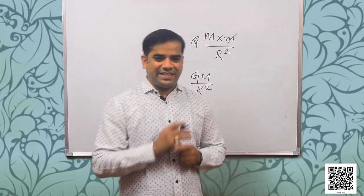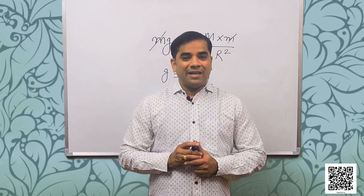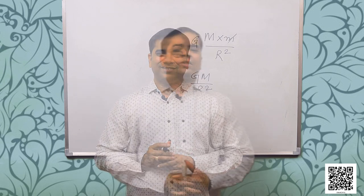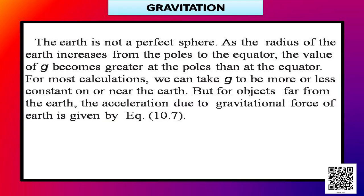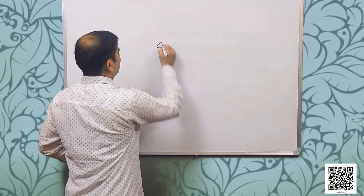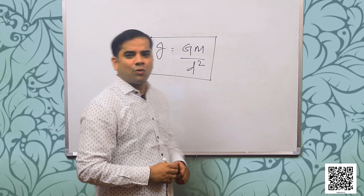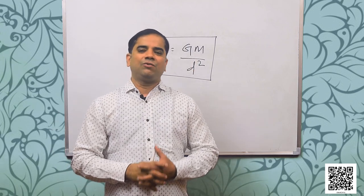Acceleration due to gravity g equals the product of the gravitational constant and mass of the earth divided by the square of the radius of the earth. The earth is not a perfect sphere. As the radius of the earth increases from the poles to the equator, the value of g becomes greater at the poles than at the equator. For most calculations, we can take g to be more or less constant on or near the earth. For objects far from the earth, g = G M divided by d square.